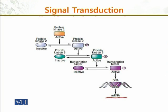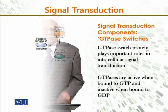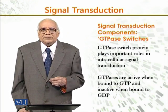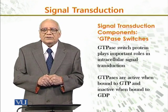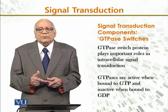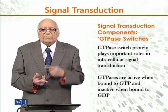For example, protein kinase becomes active and then inactive. Protein kinase number two is active, and then again inactive. Protein kinase number three is active and inactive. Eventually the signal is transmitted to the DNA, and virtually to the messenger RNA for the transmission of the signal. GTPase switch protein plays an important role in intracellular signal transduction, because wherever there is signaling, it has to be on and off, and that is done by the GTPase switch.